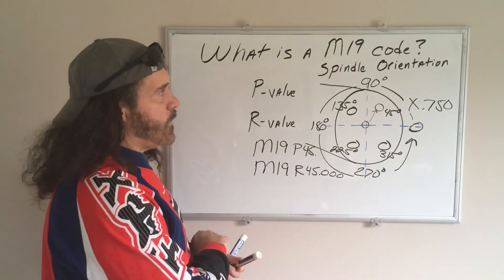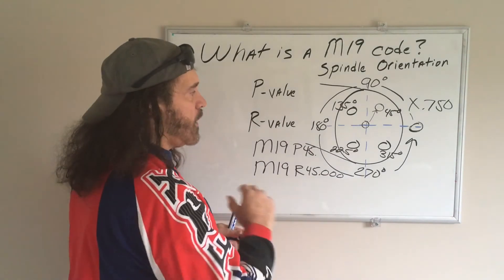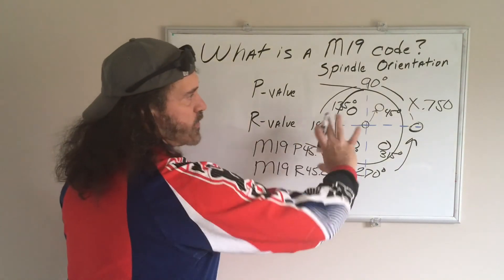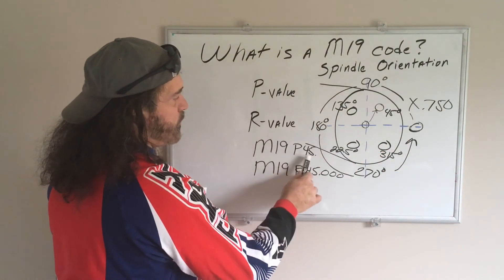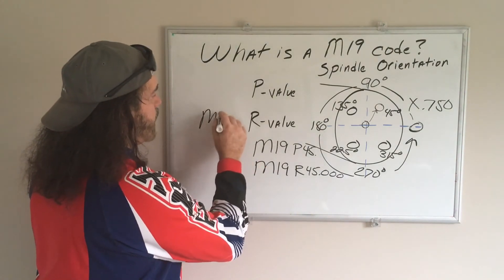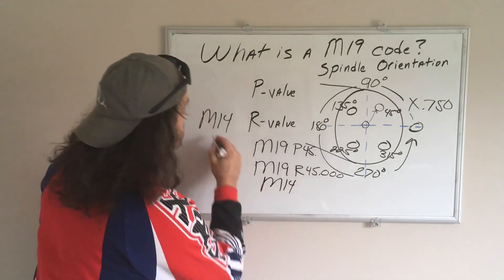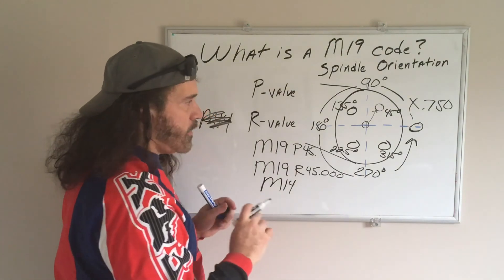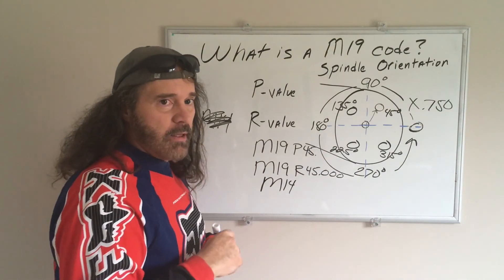To recap: you have to have the spindle stopped, then you call up the M19 code and specify the angle — for example, M19 P45 to go 45 degrees. After that you have to lock the spindle, which is done with an M14. From there you engage your live tooling and proceed from there.